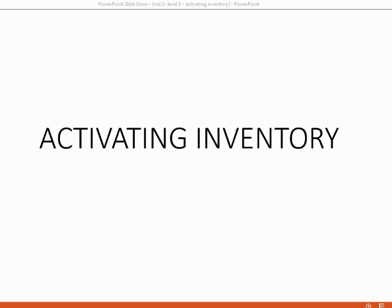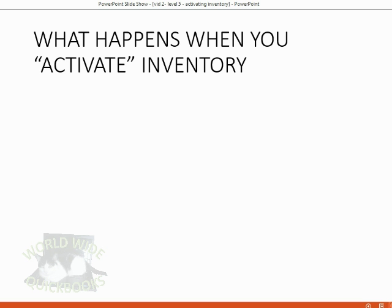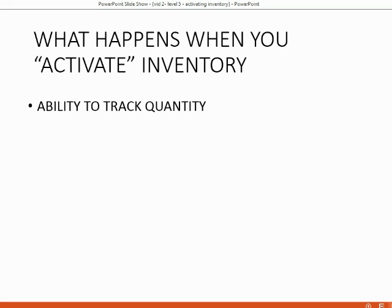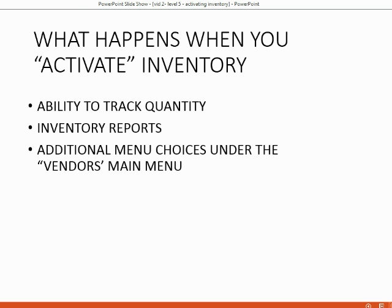If buying and selling merchandise is the main part of your business operation, you need to activate the inventory module. Activating inventory gives you the ability to track quantity, and you'll have reports showing the quantity purchased, the quantity sold, as well as the change in quantity of items you currently have. You will also have additional menu choices under the Vendors main menu specifically for managing your inventory.